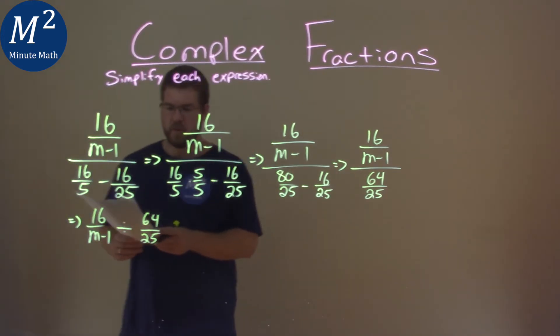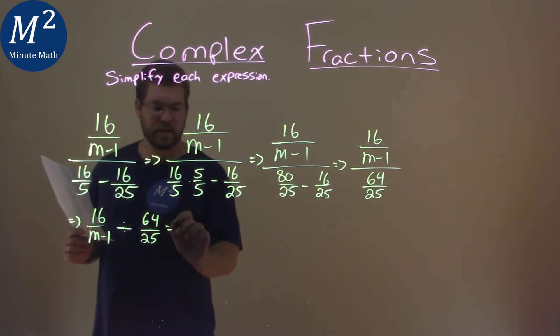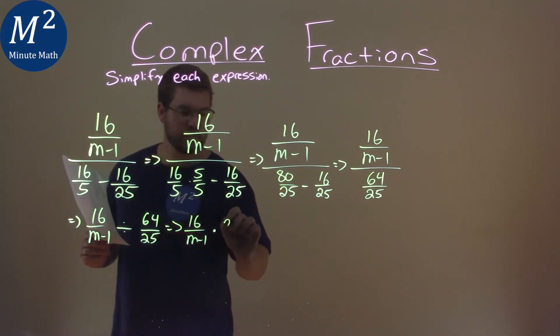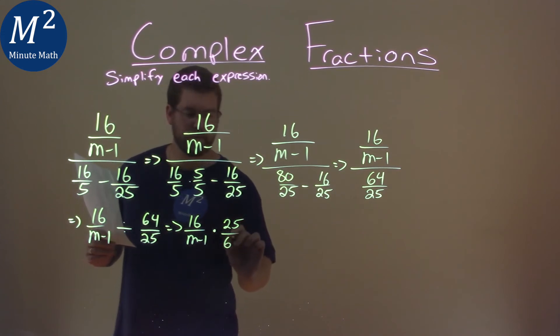Well, 64 divided by 25. We're dividing that, we can say the same thing as multiplication: 16 over m minus 1 times, flip the second fraction, 25 over 64.